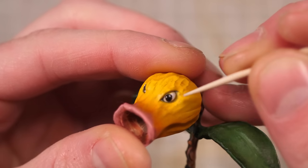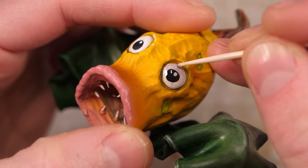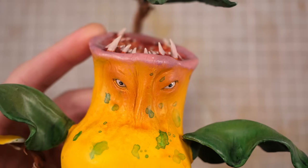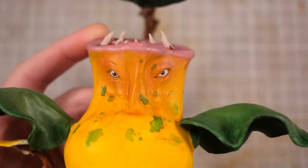Finally to give the eyes a bit of life I'll coat them in a thin layer of UV resin. Otherwise that's the color added which means all I need to do is make a garden.